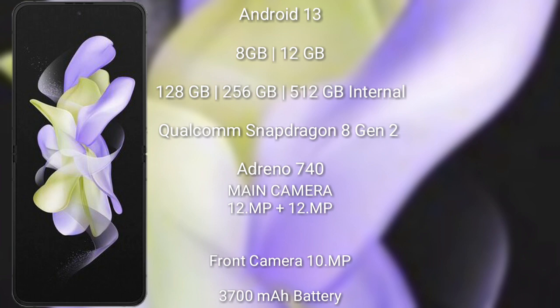It comes with 8GB and 12GB RAM, and 128GB, 256GB, and 512GB internal storage. It features a Qualcomm Snapdragon 8 Gen 2 processor with GPU Adreno 740. The Samsung Galaxy Z Flip 5 has a rear dual camera setup of 12MP plus 12MP, plus a 10MP front camera. It has a 3,700mAh battery with 25W fast charging support.